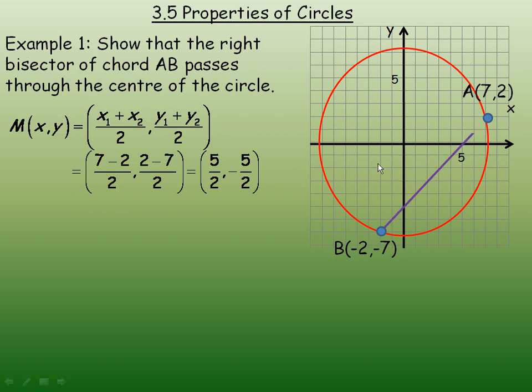Drawing the chord AB, here is the midpoint. That point is the (5/2, -5/2) point.